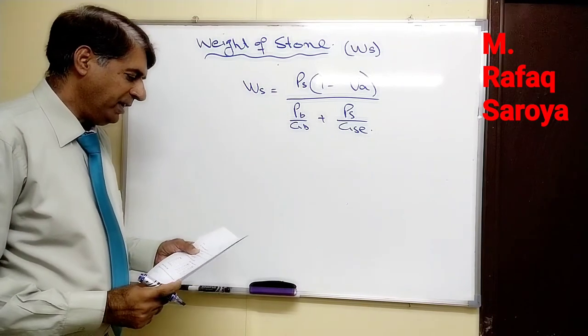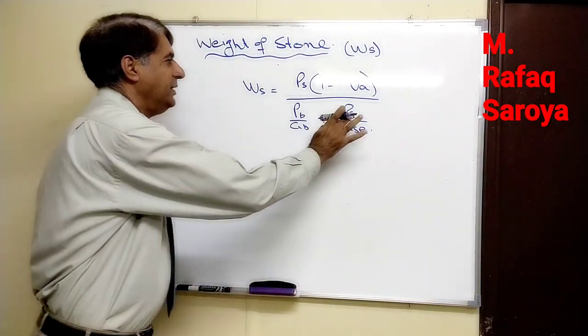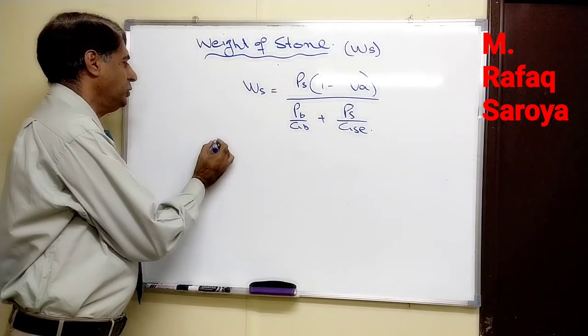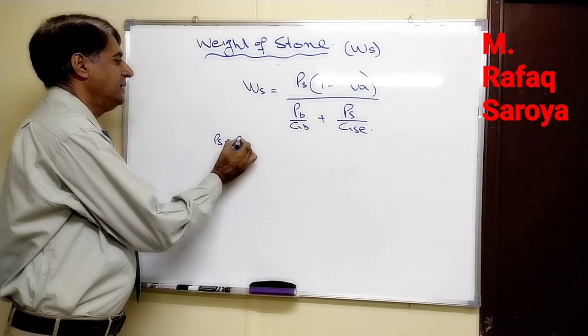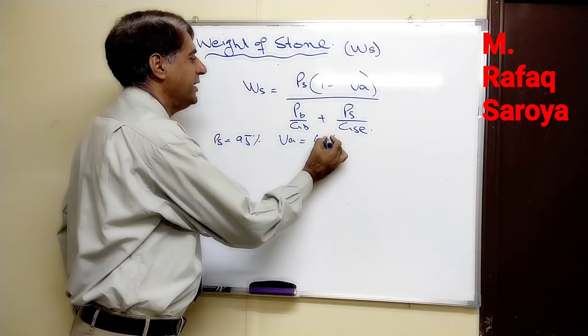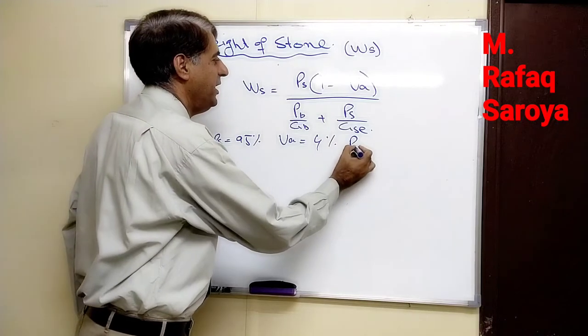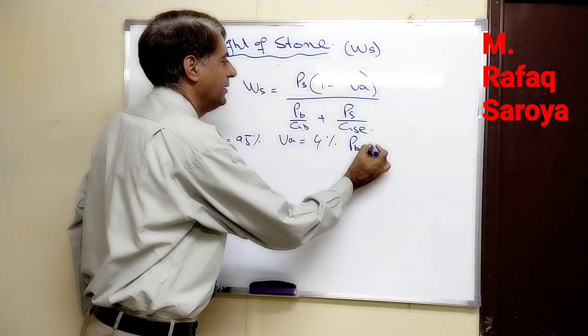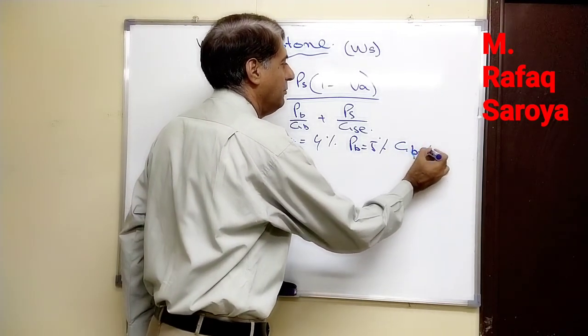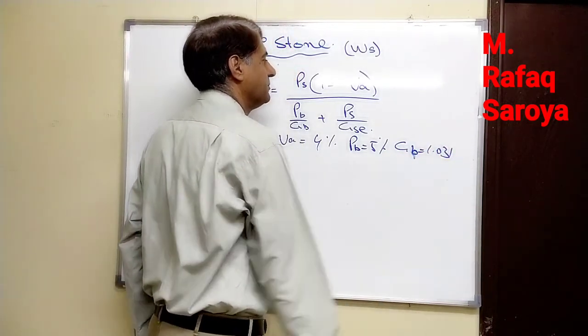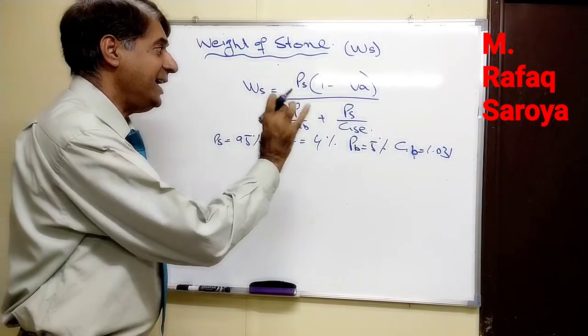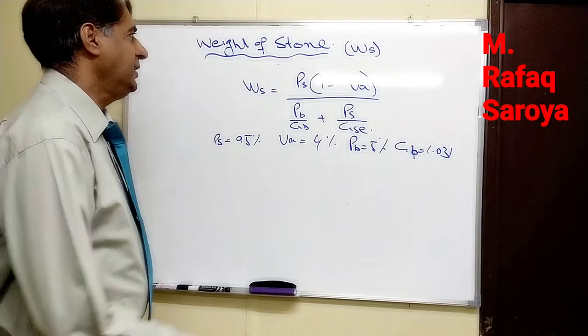Here you keep only one thing in mind: this effective specific gravity needs to be changed. Other all you know: Ps is 95%, air void 4%, Pb is 5%, this Gb value is known to you, 1.031. Similarly, the Gse is varying; Gse for each blend is changing.